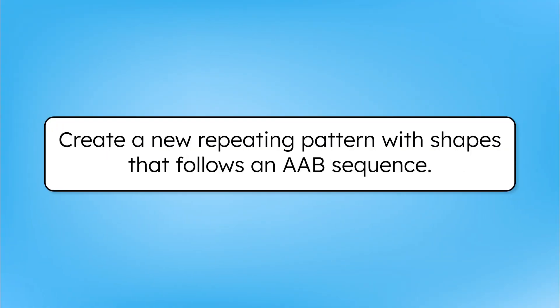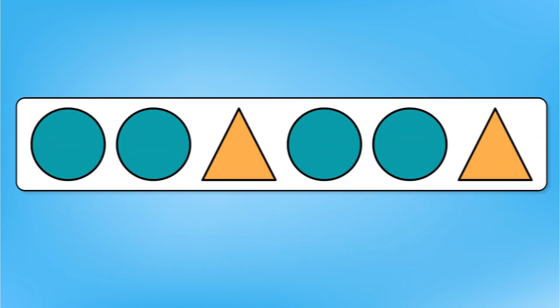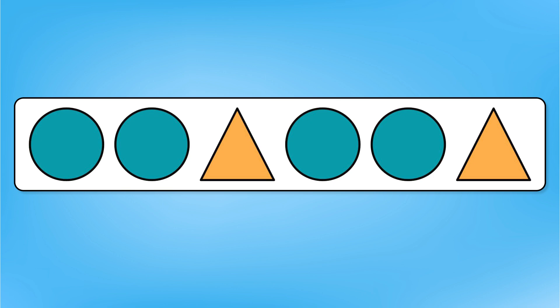Try creating a new repeating pattern with shapes that follow an AAB sequence. Think about what shapes you want to use and make sure the first two terms are the same and the third term is different before the whole sequence starts again in the same AAB order. Pause here to create your pattern in your guided notes. No matter what shapes you chose, the key is the structure. Two of the same shape followed by a different one, then repeat. As long as the order follows AAB, your pattern is spot on.